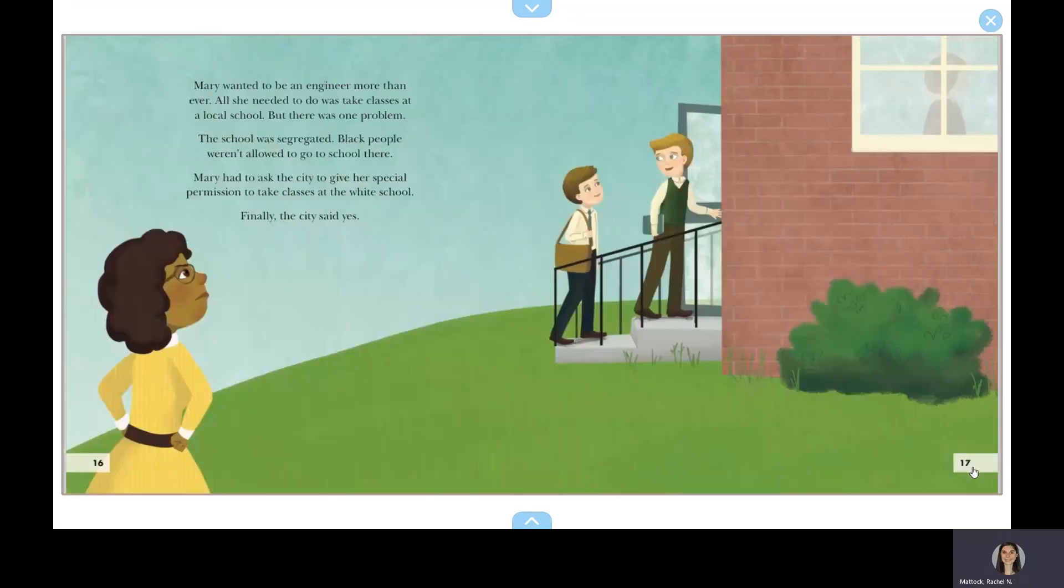Mary wanted to be an engineer more than ever. All she needed to do was take classes at a local school, but there was one problem. The school was segregated. Black people weren't allowed to go to school there. Mary had to ask the city to give her special permission to take classes at the white school. Finally, the city said yes.